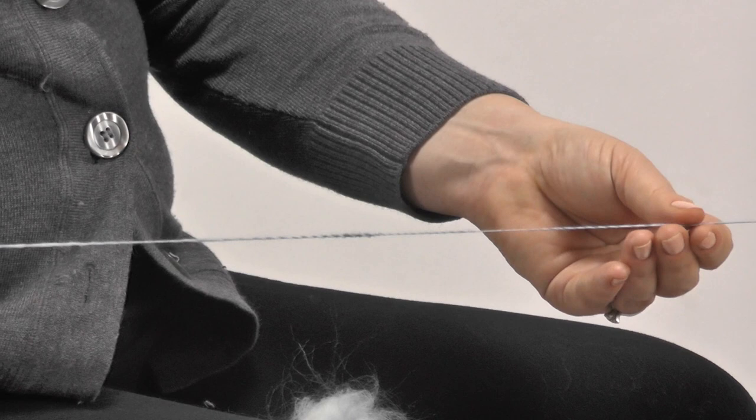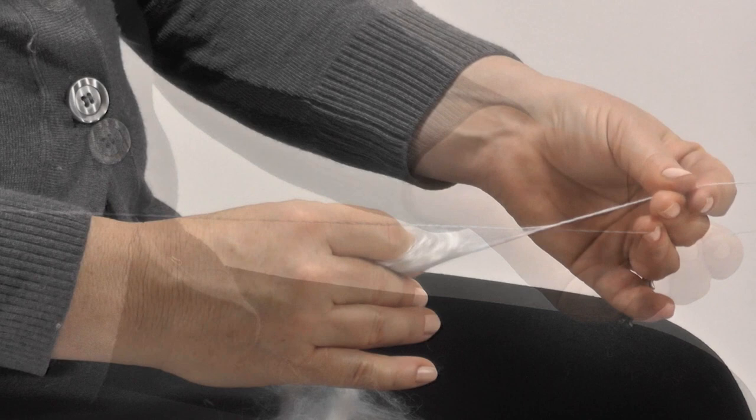The drafting triangle is just in front of your fiber hand. This is where you control the yarn's diameter by letting in more or less fiber.